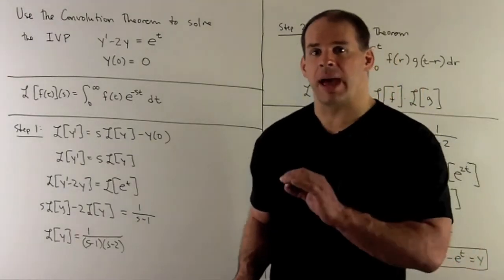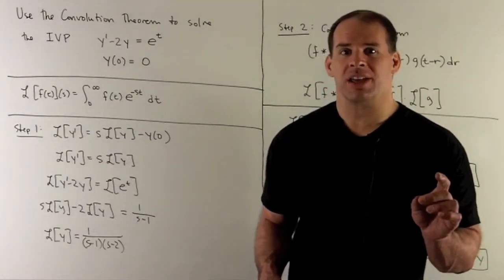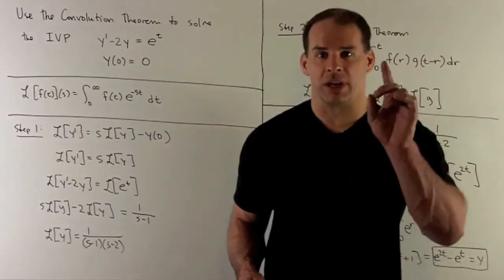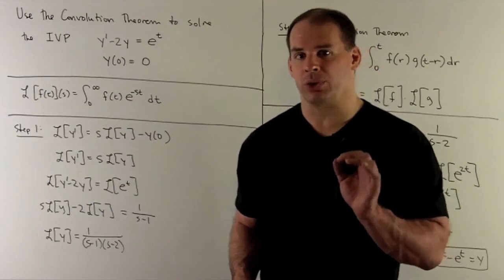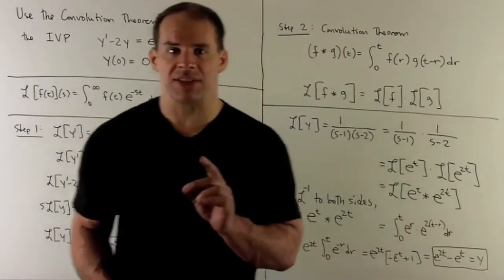Now, this is the step where we normally go to partial fractions and then look up each term in your list of Laplace transforms. Instead of doing that, we're going to go to the convolution theorem. So, what does that say?